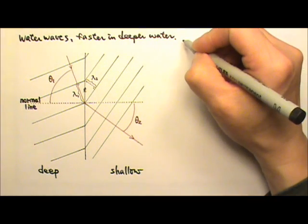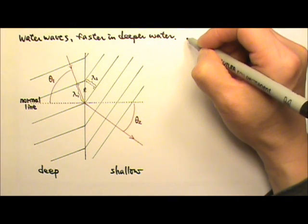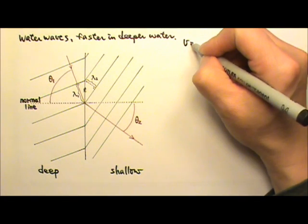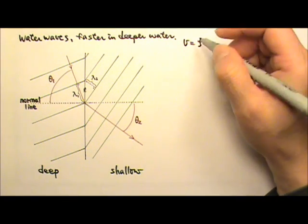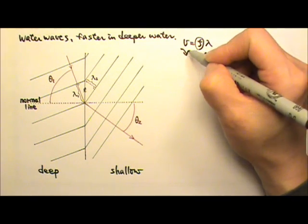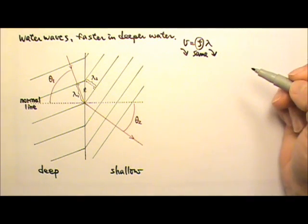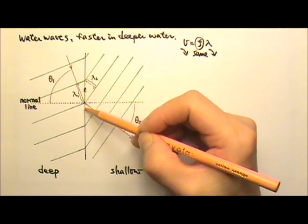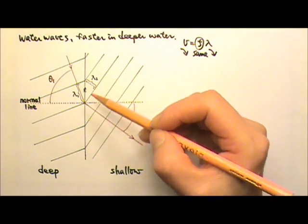Also, because for refraction, the frequency stays the same. Since V equals frequency times lambda, when the frequency stays the same and a wave slows down, the wavelength gets shorter. Bending this way makes the wavelength shorter in shallower water.